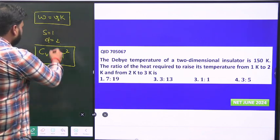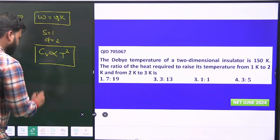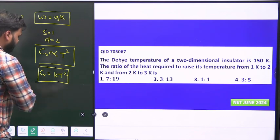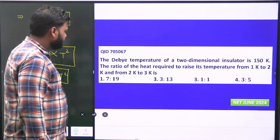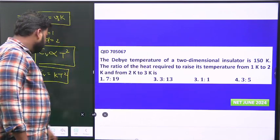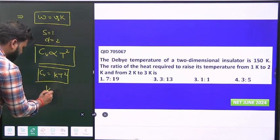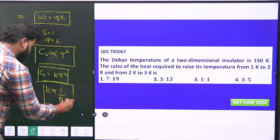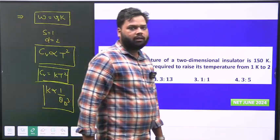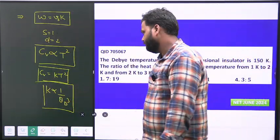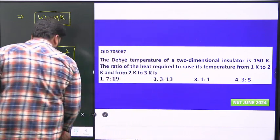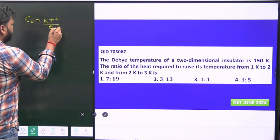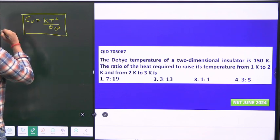Removing the proportionality constant, let's use constant K, so C_v equals K times T squared. If you see the proper relation, you'll find that K is proportional to 1 over theta_D cubed. So overall, C_v equals K T squared over theta_D cubed. This is the entire expression we need to deal with.